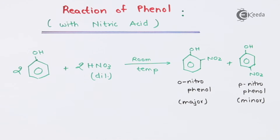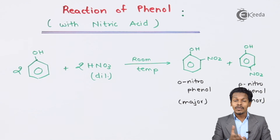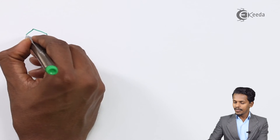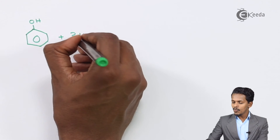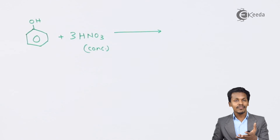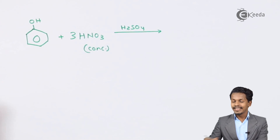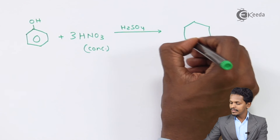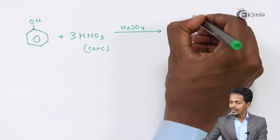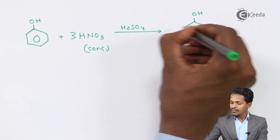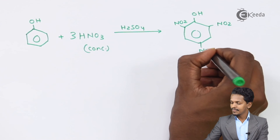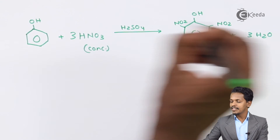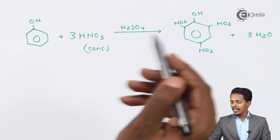Now, what happens if we use concentrated HNO3 reacted with phenol? In this case, 3 moles of HNO3 are used and the reaction occurs in the presence of sulfuric acid. The product obtained is picric acid — the OH group remains, while all three hydrogens at the ortho and para positions are substituted by NO2 groups, and 3 moles of H2O are released as a byproduct.